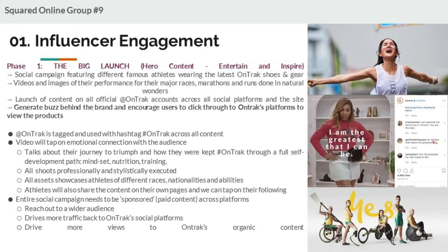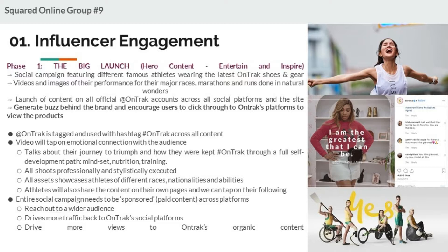The first phase of influencer engagement is the big launch on all platforms, featuring videos and images of famous athletes wearing the latest On Track gear as they complete their race. We aim to generate buzz and drive traffic to these platforms by creating emotionally appealing content using stories of the athlete's journey to entertain our audience and inspire them to use On Track.